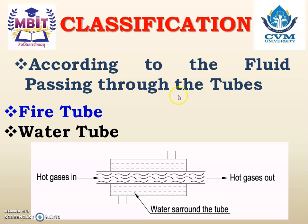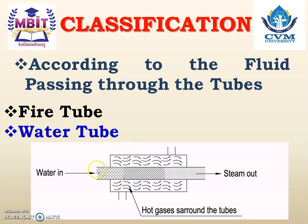According to the fluid passing through the tubes: if hot gases pass through the tube and water surrounds the tube, it is called a fire tube boiler or smoke tube boiler. If water passes through the tube and hot gases surround the tube, it is called a water tube boiler.